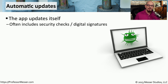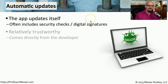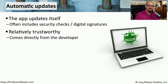Sometimes an application will have its own update process built into the app itself. This usually has security checks and digital signatures built into the process. Although you might not see the digital signature, the update process is automatically performing that verification. This process has a high amount of trust because it's the application itself that is performing the update. You don't have to download any files yourself, and the update is verified as coming from the manufacturer of the software. However, this process is not a 100% guarantee that the code you're updating is indeed legitimate.